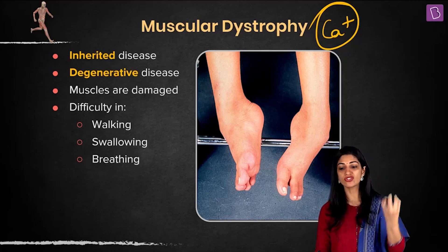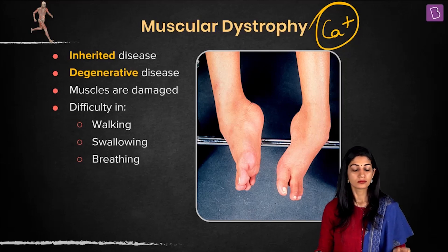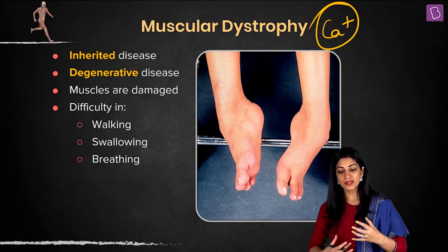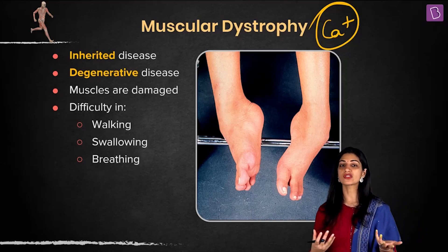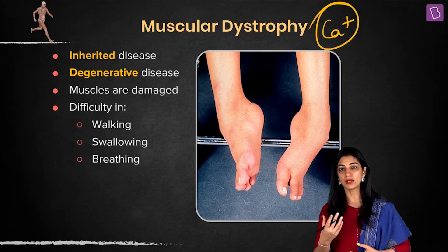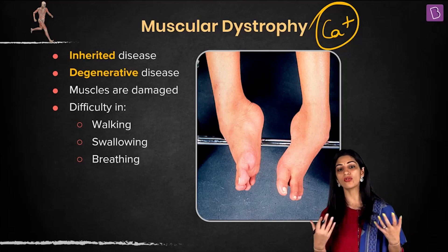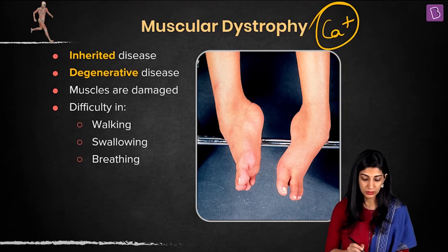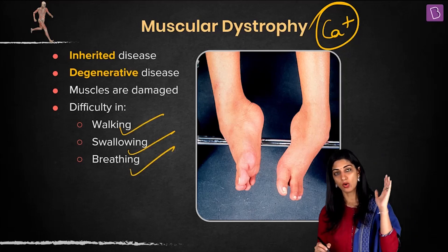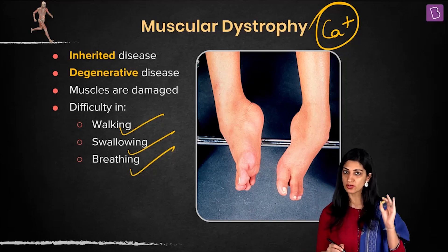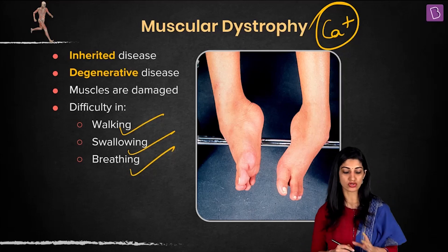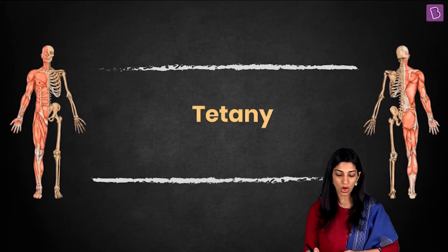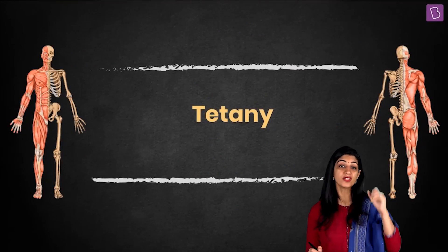In muscular dystrophy, there is accumulation of calcium. At your level, just remember that the function of the skeletal muscle is not happening — the patient is not able to breathe, not able to swallow, and none of the muscles are working. Walking, swallowing, and breathing are all affected. The structure and function of the muscles are both damaged. It is a degenerative disease.